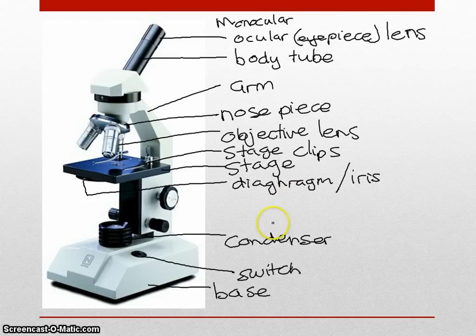The diaphragm and condenser together allow you to control the amount of light coming through. There's a hole in the stage, and they control how much light comes through. More light sometimes makes it more difficult to see, depending on the thickness of your slide.